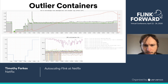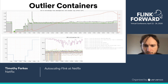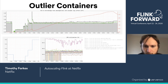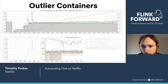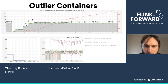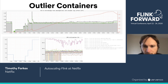Another concern is outlier containers. Even an adequately provisioned router can build up Kafka lag if one container is running on a degraded host. In one example, a container had much higher CPU utilization than the others; investigation revealed the host had degraded memory with a high error rate for reads and writes. The Titus team is working on improving automatic detection and remediation of these bad hosts.